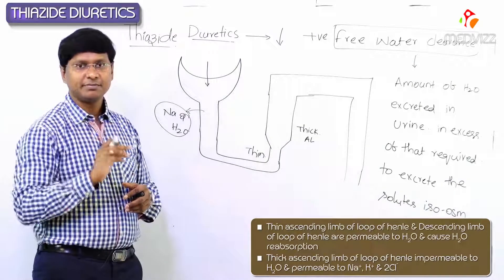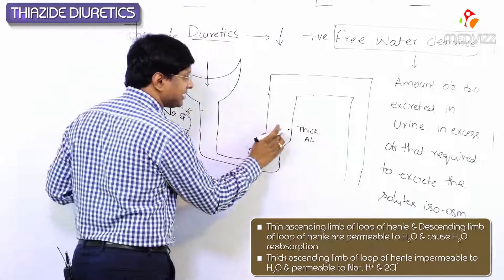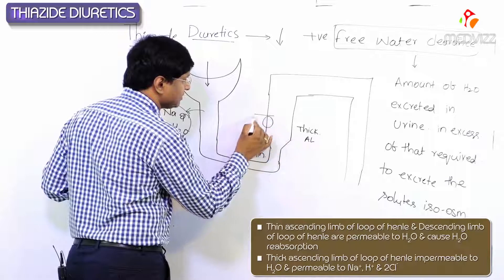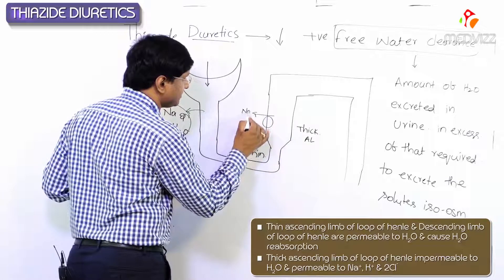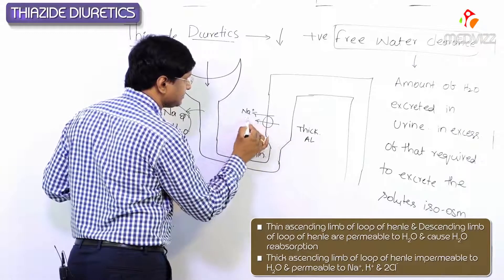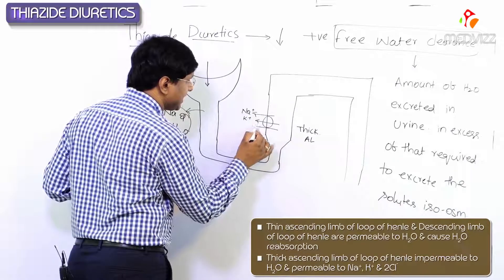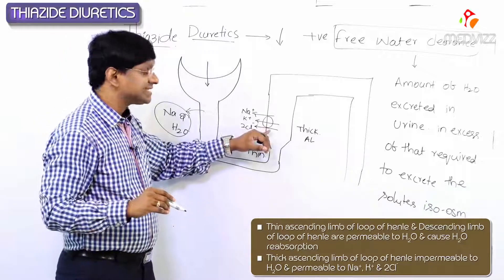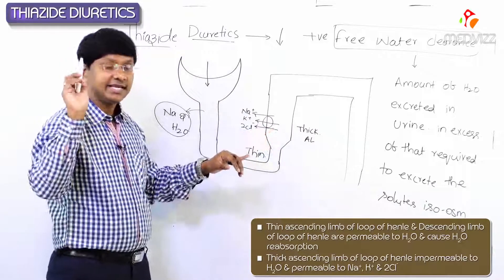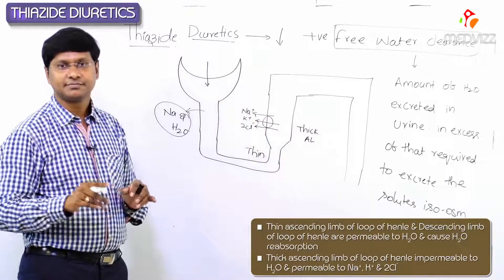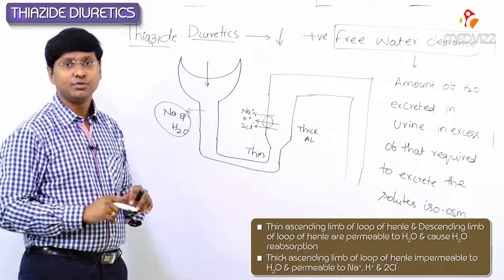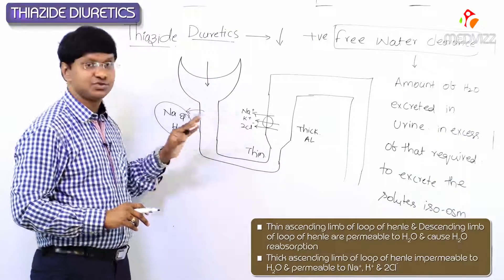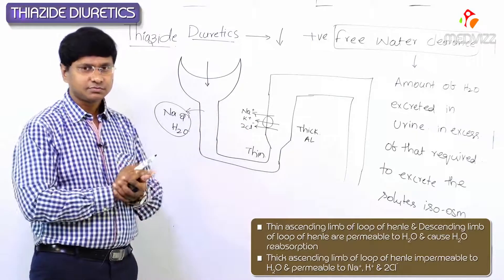At the thick ascending limb of the loop of Henle, it is impermeable to water. What is being reabsorbed here is sodium, potassium, and 2 chloride. The thick ascending limb is permeable only to sodium, potassium, and 2 chloride, not to water.